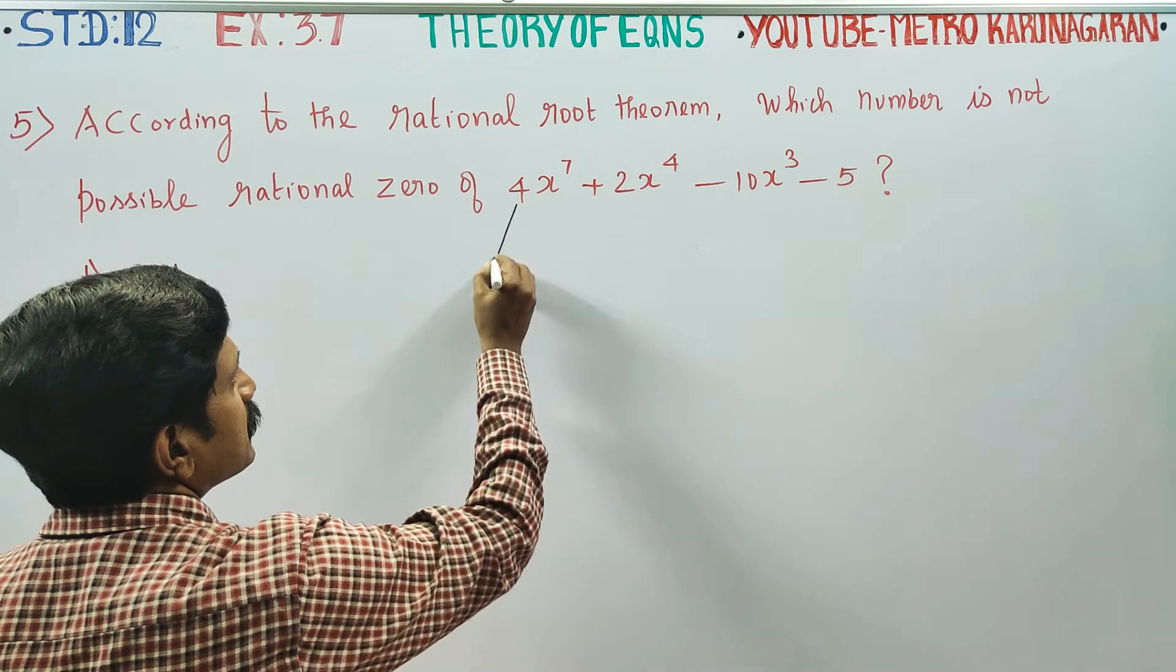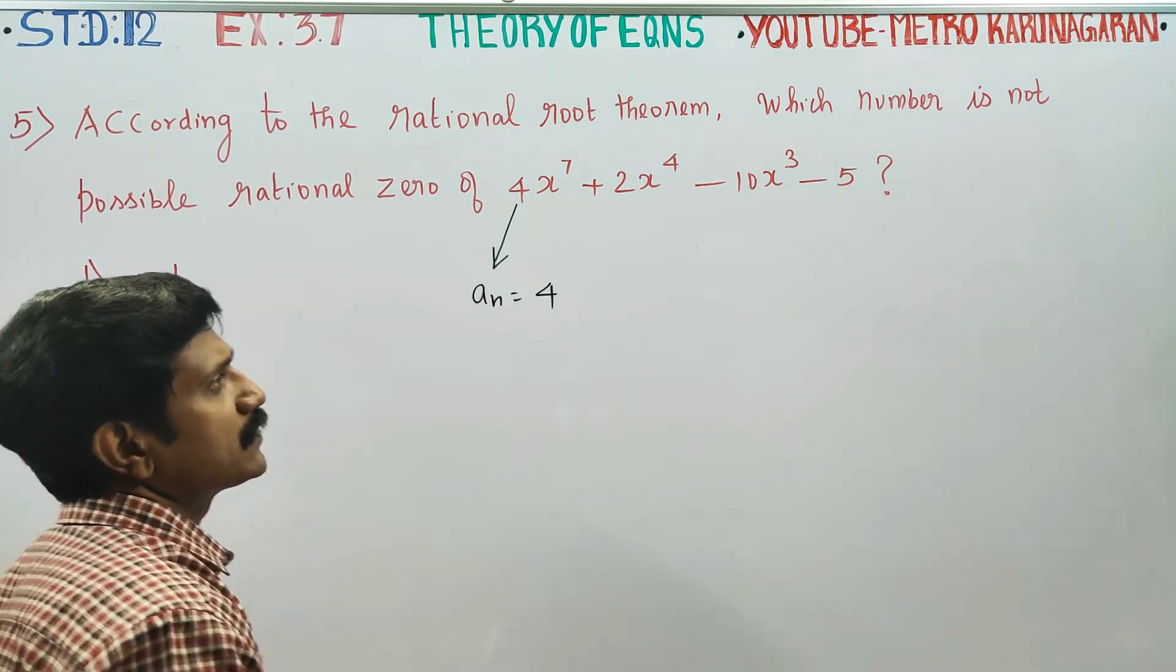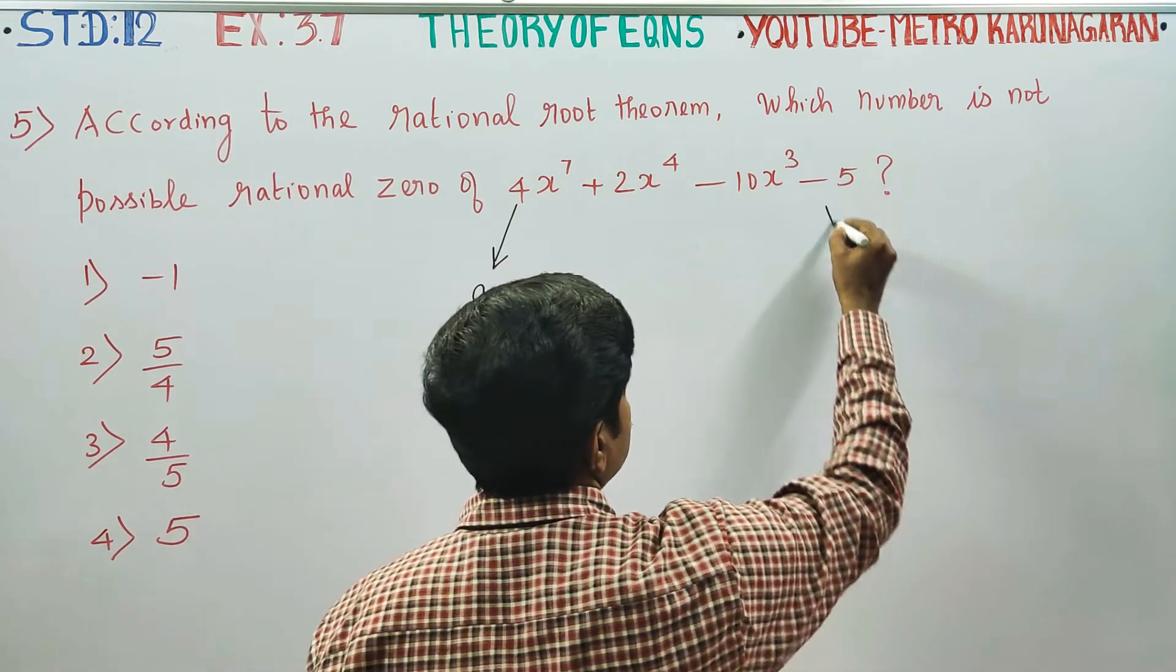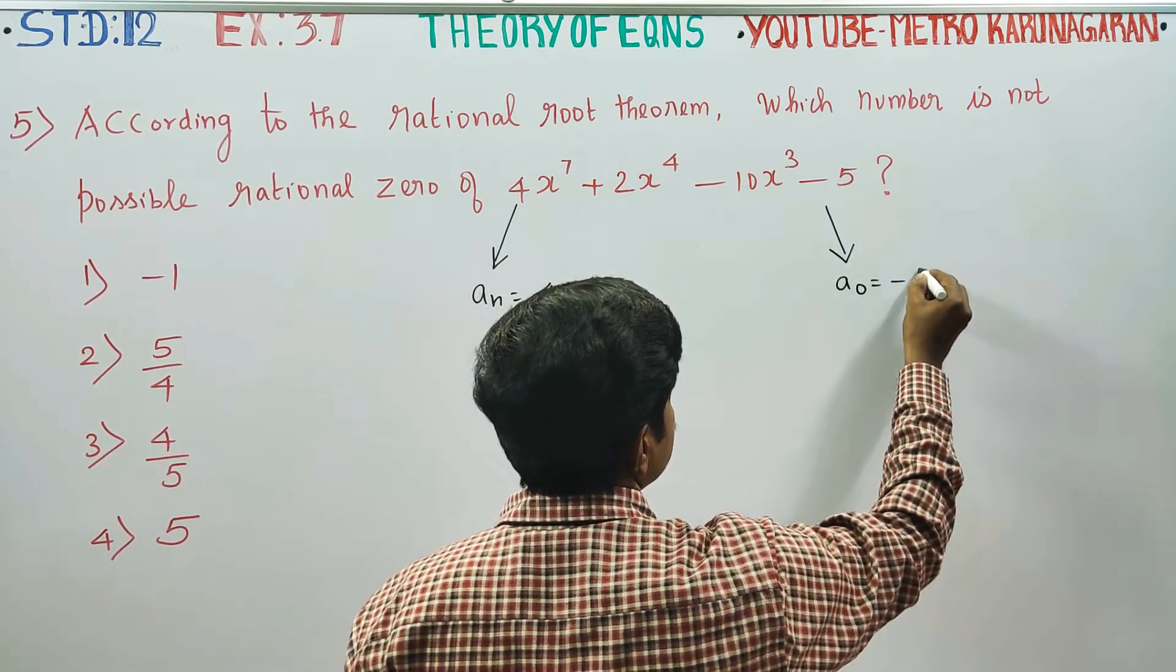This is my aₙ, aₙ equals 4. This is my a₀, a₀ is minus 5.